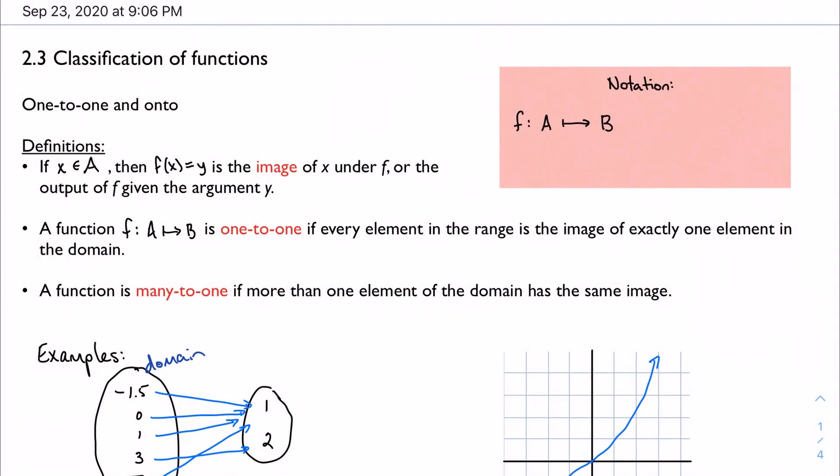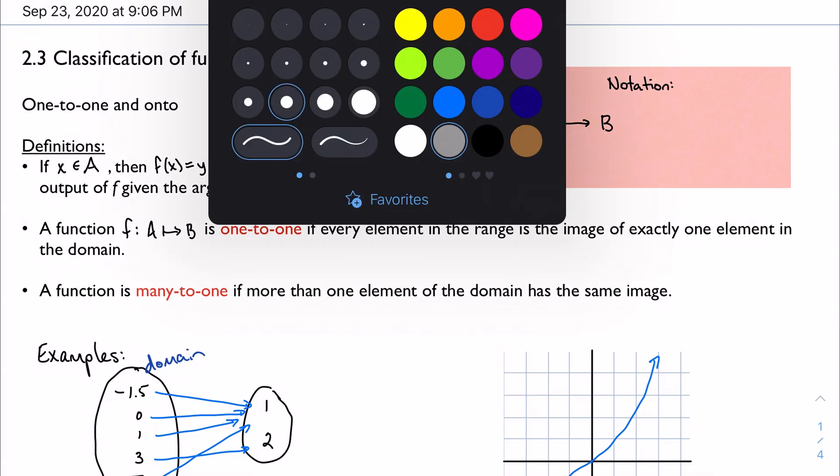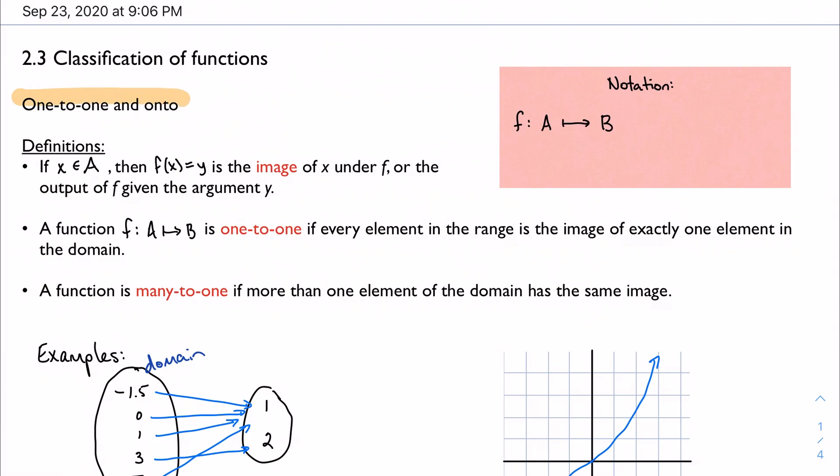In section 2.3 we're talking about classifying functions using two main pairs of distinctions. The first one is the difference between one-to-one and onto functions.